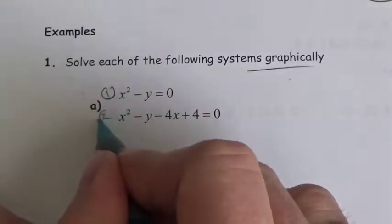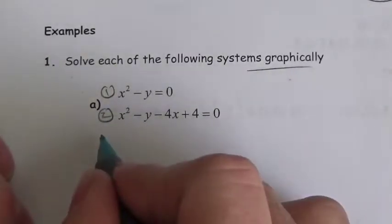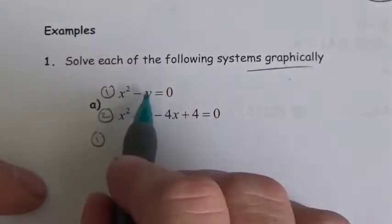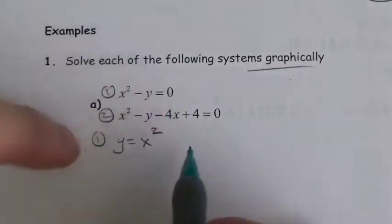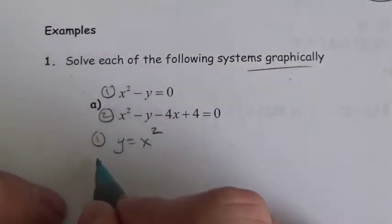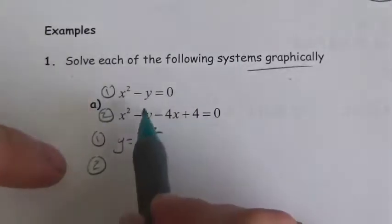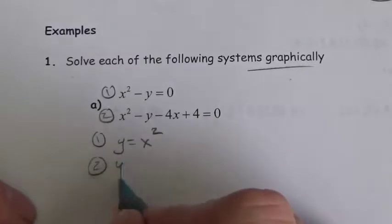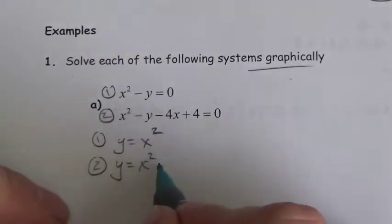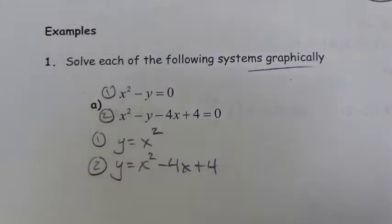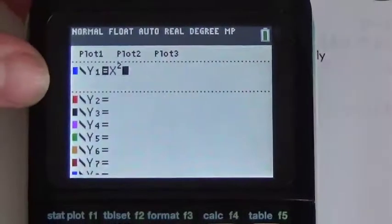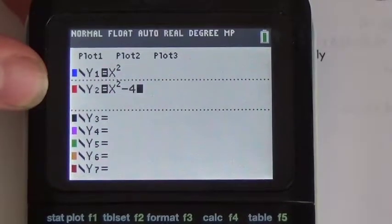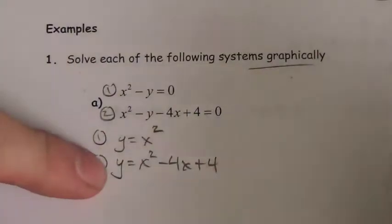Here's equation 1 and here's equation 2. If we're going to do this graphically, we've got to isolate the variable in both cases. In the first equation, I'll bring y over to the other side, so I get y equals x squared. For equation 2, I'll do the same thing — y equals x squared minus 4x plus 4. Now I'll go to the calculator, enter y equals x squared for the first equation, and then x squared minus 4x plus 4 for the next one.